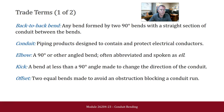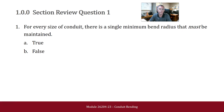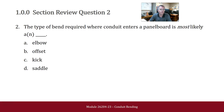There are some trade terms we should become familiar with for this module. For the review questions: For every size of conduit, there is a single minimum bending radius that must be maintained — True or False? The answer is False. The type of bend required where a conduit enters a panelboard is most likely an Elbow, an Offset, a Kick, or a Saddle — and it's going to be an Offset.